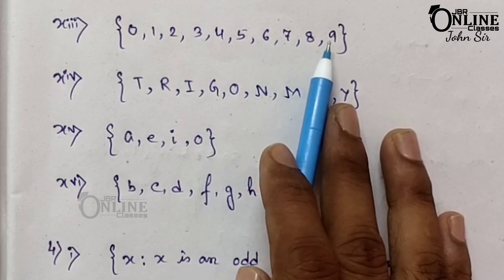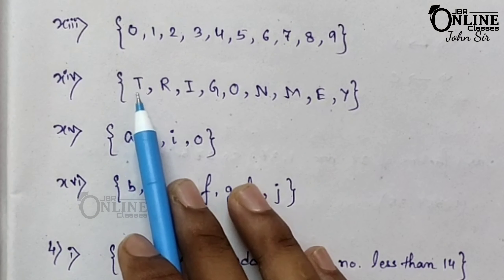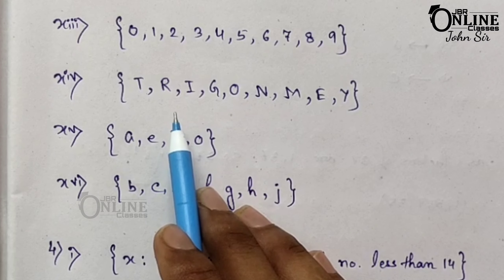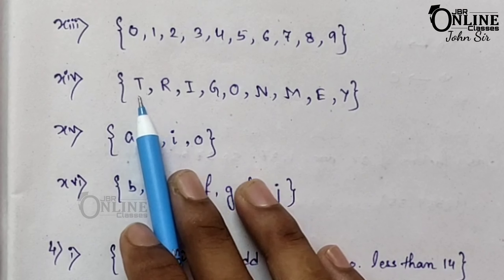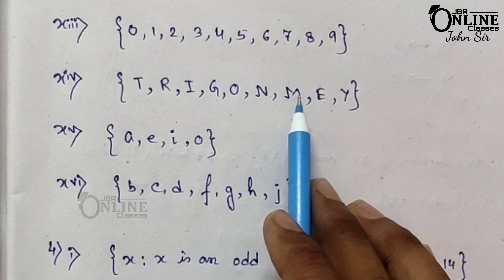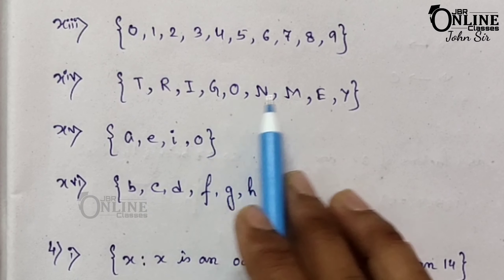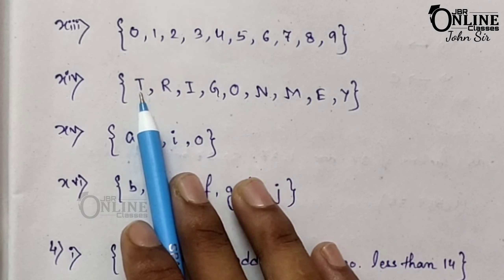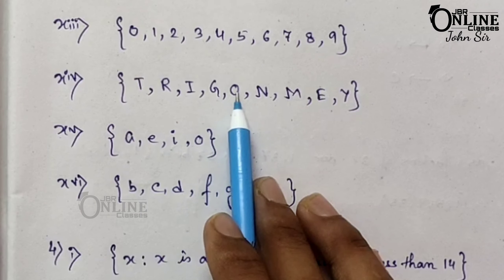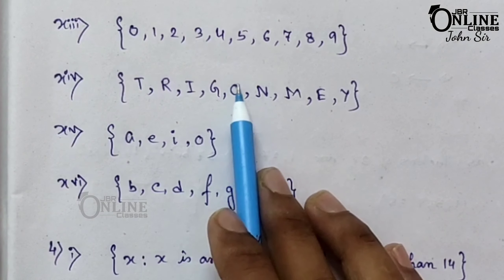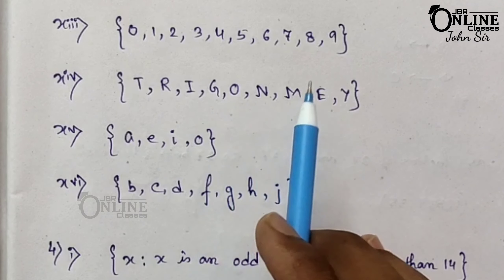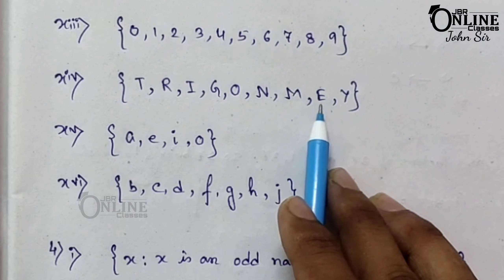You have to write down only the letters in the word Trigonometry, but don't repeat the letters. Just write each letter only once. So: T, R, I, G, O, N — only one O since it already appears — then M, E, and Y.